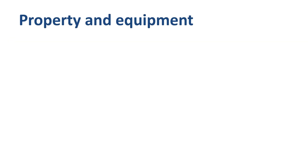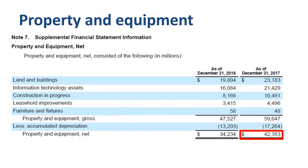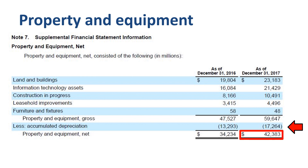Property & Equipment: the balance was $42.4 billion at year-end 2017, up $8.1 billion versus year-end 2016. In the cash flow statement analysis, we saw that the capex cash outflow in cash from investing activities was $13.2 billion in 2017. The major balance sheet components at year-end 2017 were land and buildings $23.2 billion, information technology assets $21.4 billion, and construction in progress $10.5 billion. While the gross value of property & equipment has gone up significantly, accumulated depreciation has also increased, as the value of assets in use is allocated to the years of usage.